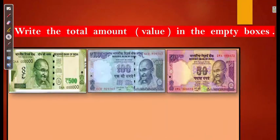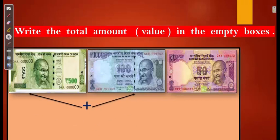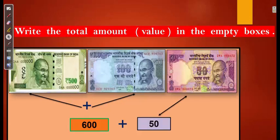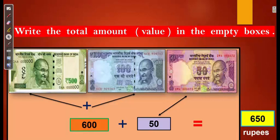Write the total amount or value in the empty boxes. Here we have a 500, a 100, and a 50 Rupees note each. Let's add them together: 500 plus 100 gives 600, and adding the remaining 50 equals 650 Rupees. So the total amount or value of the given notes equals 650 Rupees.